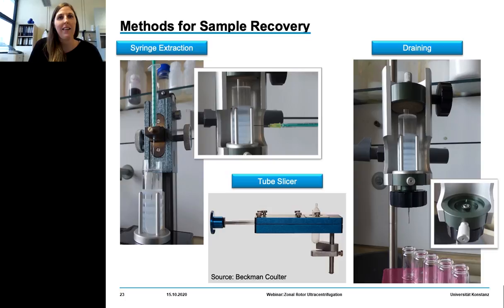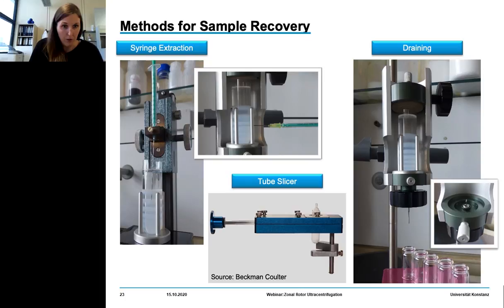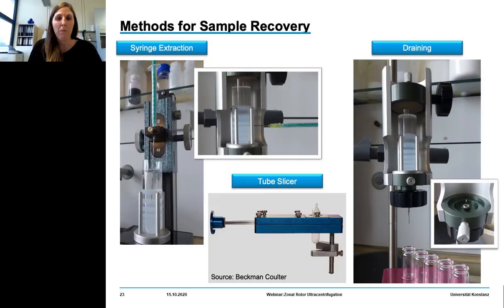It also works very well if we inject a needle from the side to selectively extract a specific band. We can also use a piercing unit and discharge the fractions from below. However, sometimes you want a 100% clean fraction. If you use a cannula and go through a band, it can happen that you sweep particles from a higher located band away and contaminate the desired band.